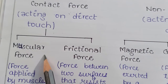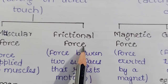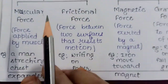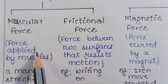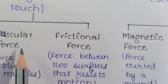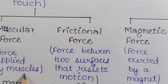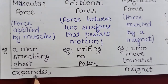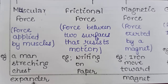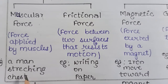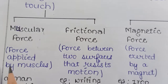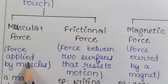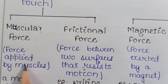Contact forces are of two types: muscular force and frictional force. Muscular force is a type of force applied by a muscle. For example, a man stretching a chest expander. The force produced by the muscles of a living being is called muscular force, also known as biological force.